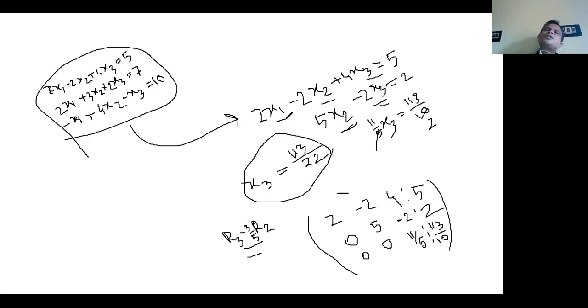This procedure is known as the Gauss elimination procedure. This procedure is applicable only when the number of variables equals the number of equations and the rank of the coefficient matrix and the rank of the augmented matrix should be the same.